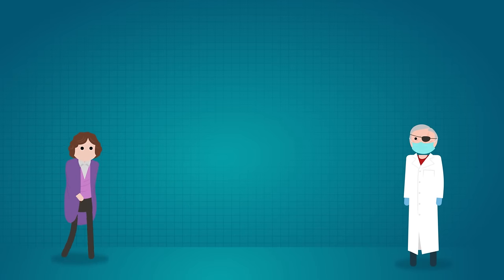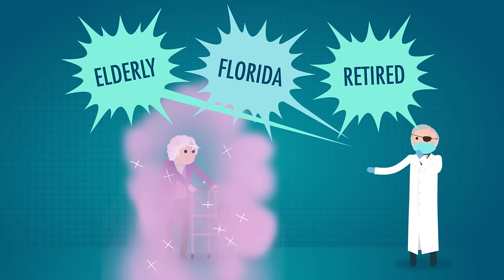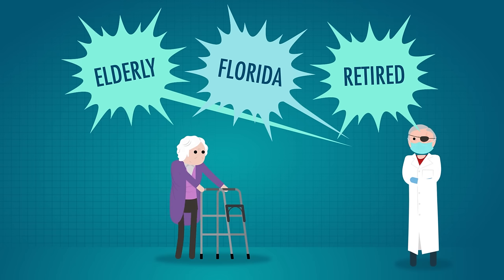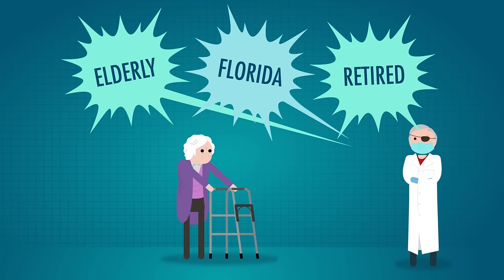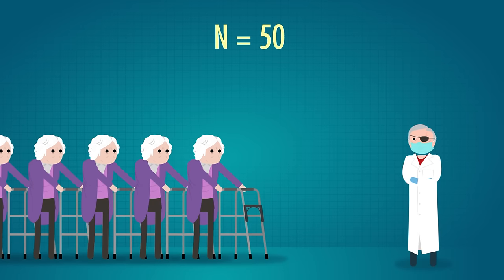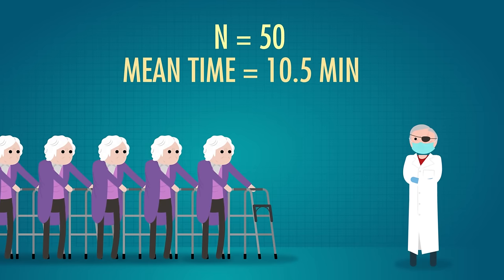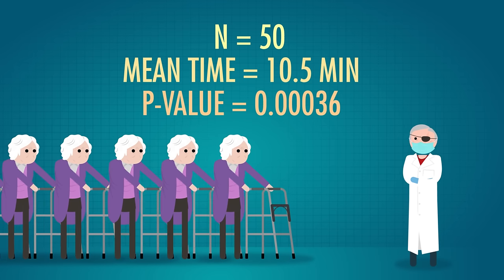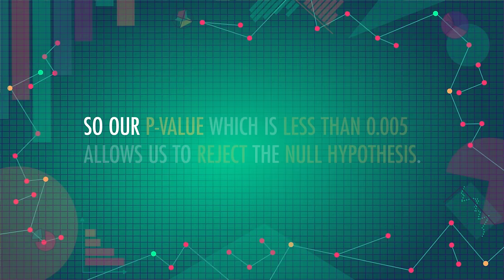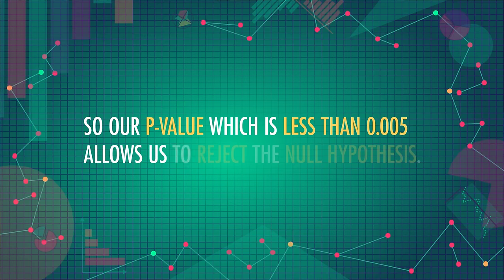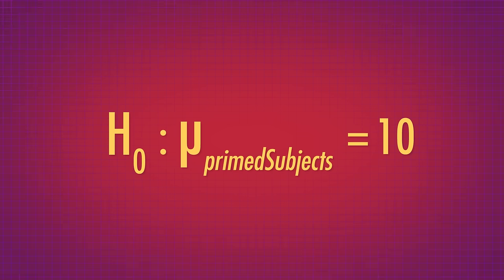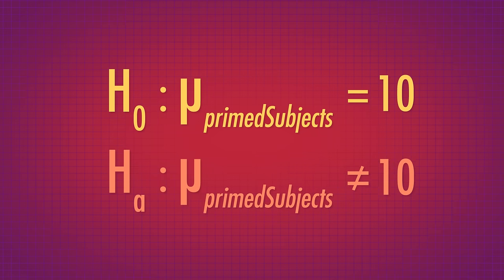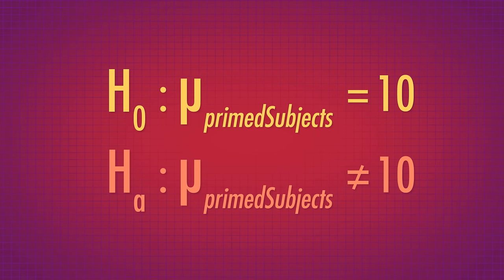For example, we might want to know whether people who were primed with the words elderly, Florida, and retired walked more slowly than the average person who takes 10 minutes to go around our office building, with a standard deviation of one minute. We think people primed with those words will, so we take a sample of 50 people, prime them, and set them off. Their mean time is 10.5 minutes, which corresponds to a p-value of .00036. We already decided beforehand to make our alpha .005, so our p-value, which is less than .005, allows us to reject the null hypothesis — that people primed with words about being old take a mean of 10 minutes to walk around the building. But while we've rejected that null, the alternative hypothesis is just that their mean isn't 10. Our p-values can't tell us anything else.